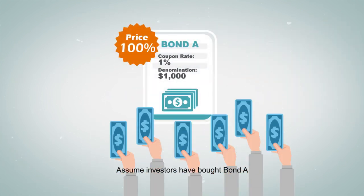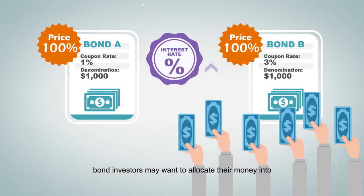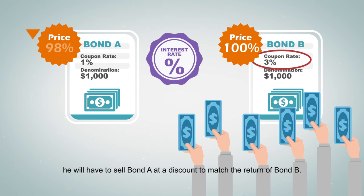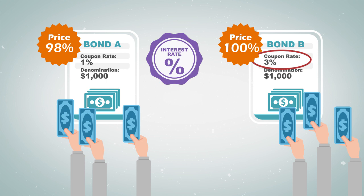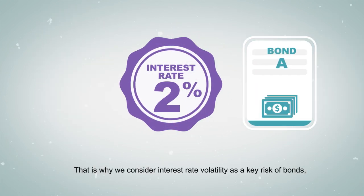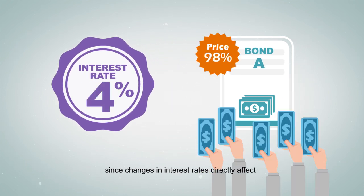Assume investors have bought bond A. When interest rates rise, bond investors may want to allocate their money into bond B that offers a higher coupon rate. If an investor wants to sell bond A, he will have to sell it at a discount to match the return of bond B. That is why we consider interest rate volatility as a key risk of bonds, since changes in interest rates directly affect the bond price through demand for the bond.